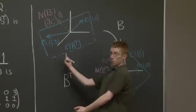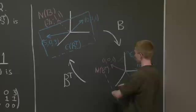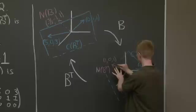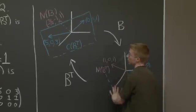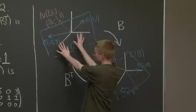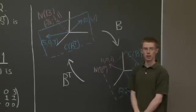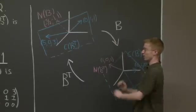And what does B transpose do? Well B transpose kills this left null space, kills this vector, and it takes everything else into the row space, into the column space of B transpose. Thanks for doing this exercise together. I hope this picture is helpful.